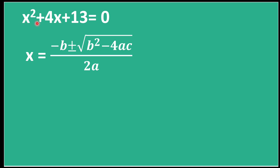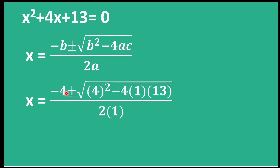The general form of the quadratic equation is ax² + bx + c. Comparing, we confirm a = 1, b = 4, and c = 13. Now we substitute these values into the quadratic formula: x = (−4 ± √(4² − 4·1·13)) / (2·1).